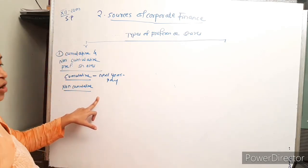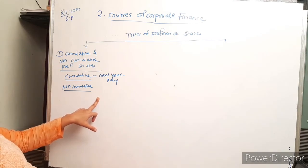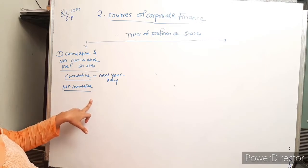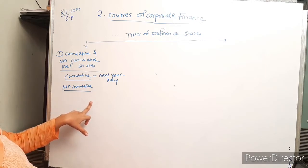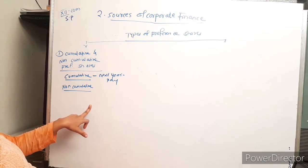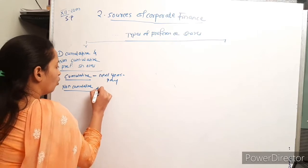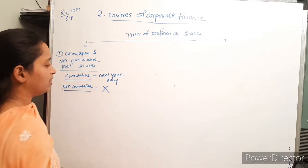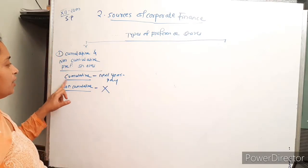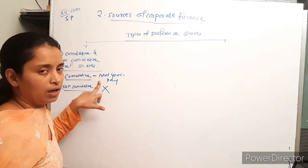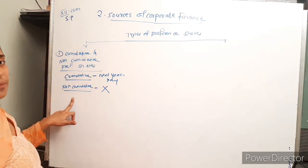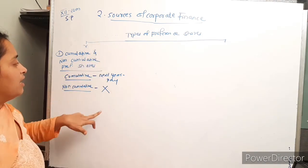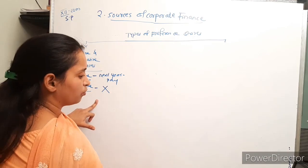Non-cumulative preference shares are those on which dividend can be paid only out of the profits of that particular year. If the company cannot pay dividend in a given year, it is not carried forward or accumulated.